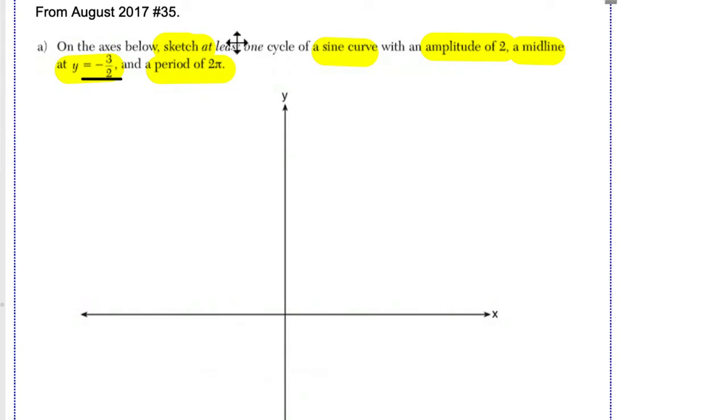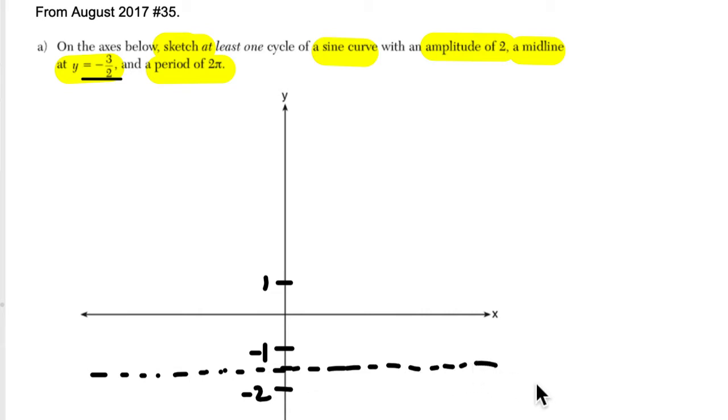So I'm going to just go right to the pen and approximate. So here's positive 1. Here's negative 1. Here's negative 2. So negative 1.5 is right here. This is the midline here. Okay. So that's y equals negative 1.5. That's the midline.